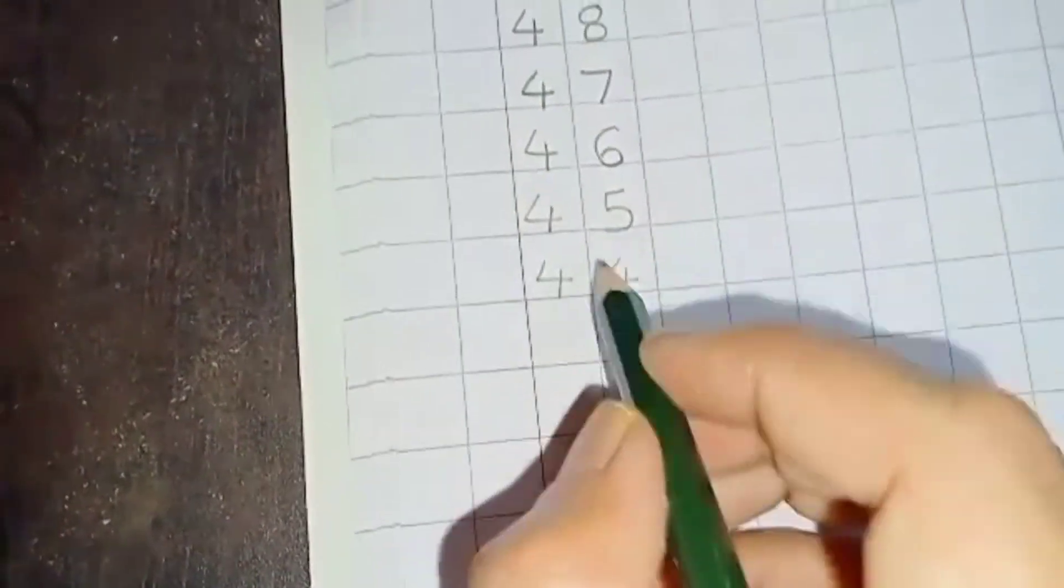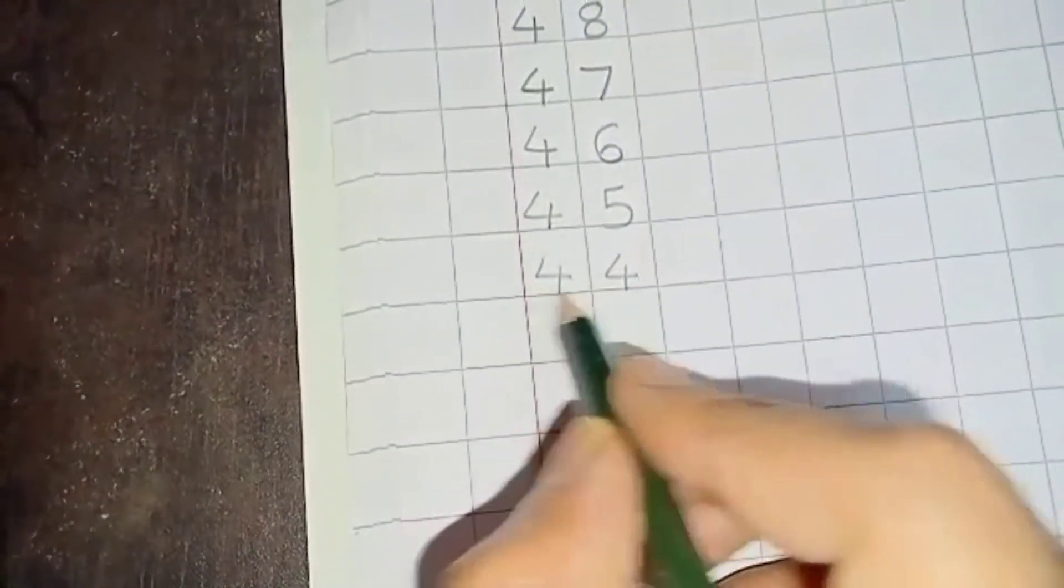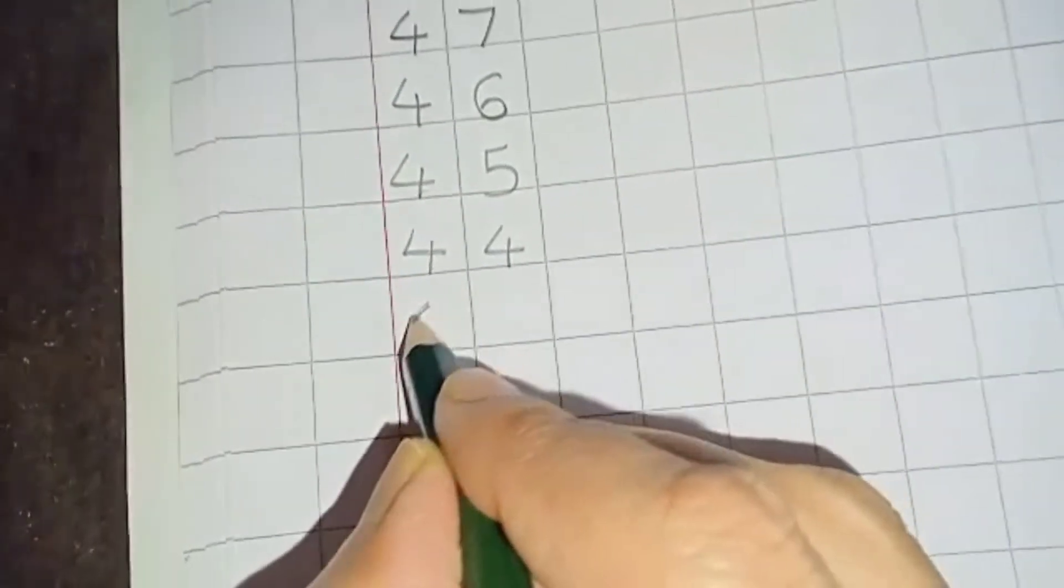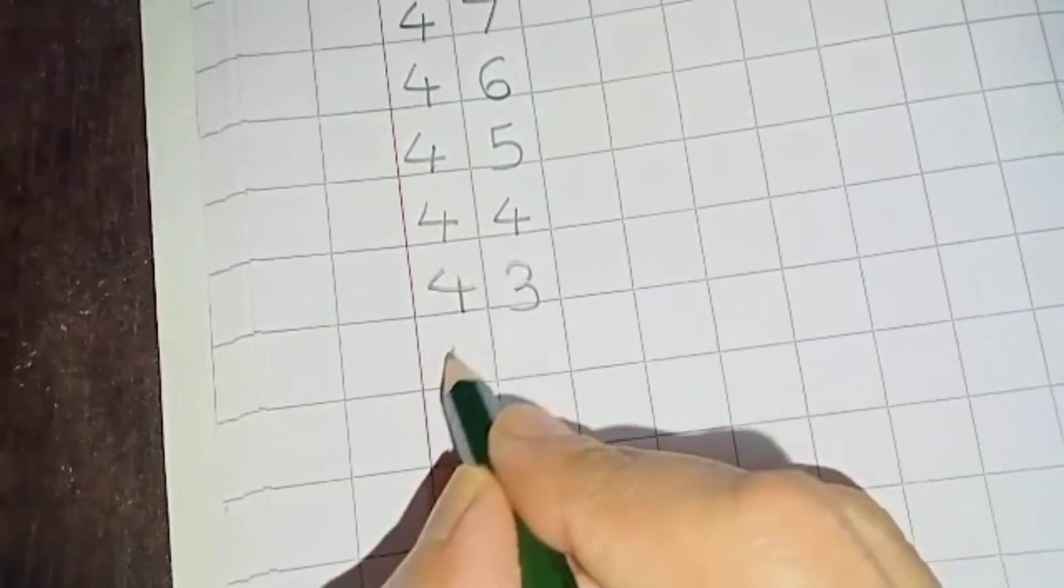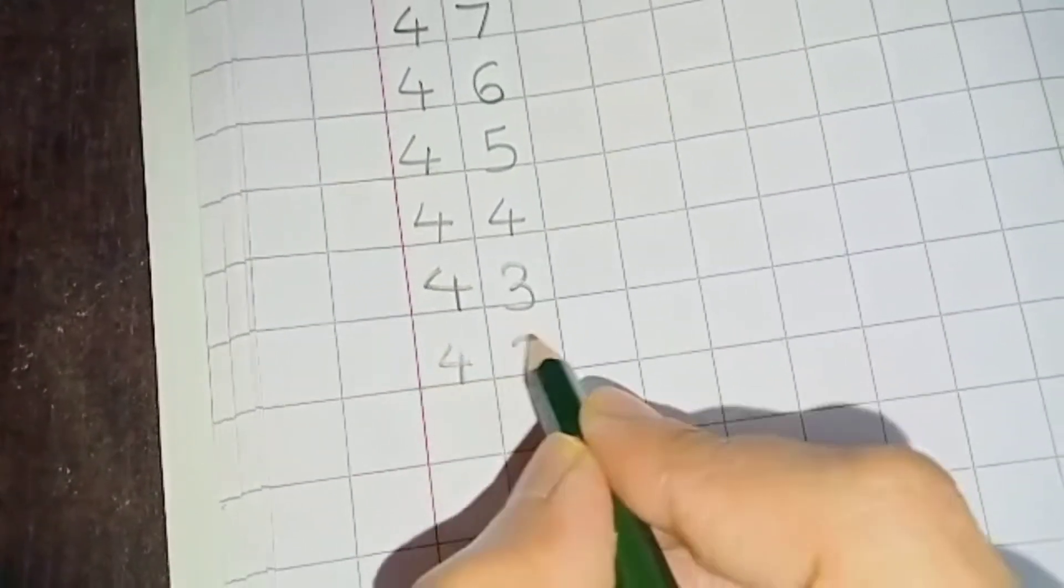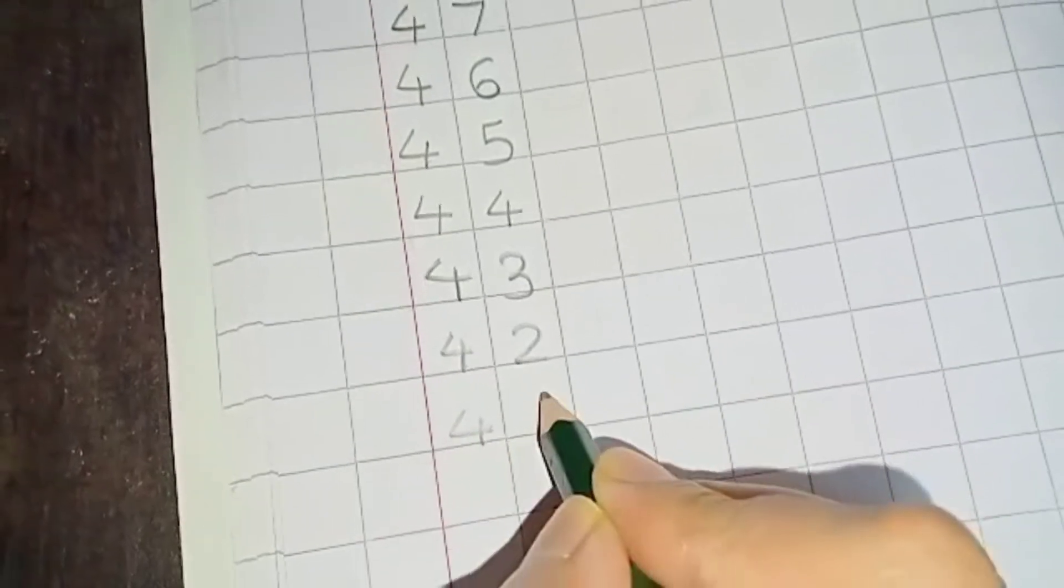And children, remember when you are writing the numbers, the numbers should touch this below black line. Then 44, 43, 42, and 41.